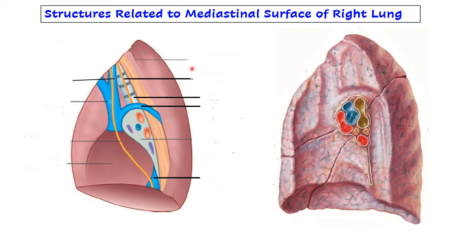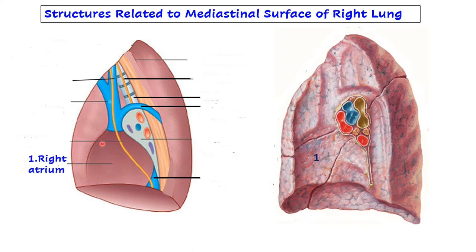Now you can be asked to draw the labeled diagram of the mediastinal surface of the right or left lung. In spotting, you can be asked to tell which structure is related to all these grooved or depressed areas. First, you will draw the right lung along with its hilum. After that, the first structure which will come in relation is the big chamber anterior inferior to the hilum - you will draw the right atrium. This big impression between the anterior border and the hilum in the lower part is the impression for the right atrium.